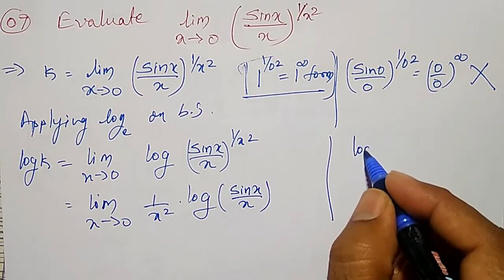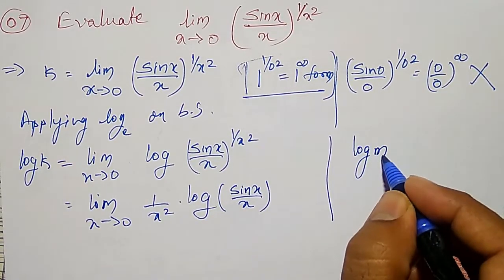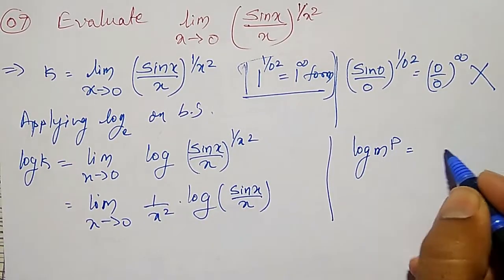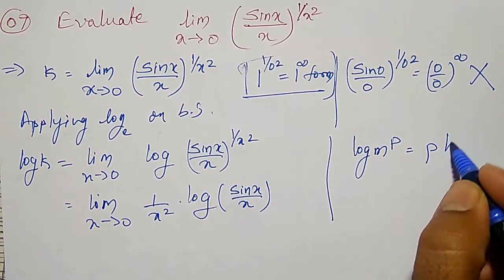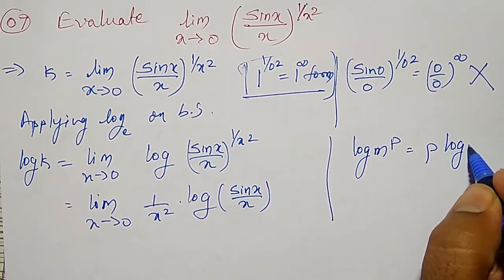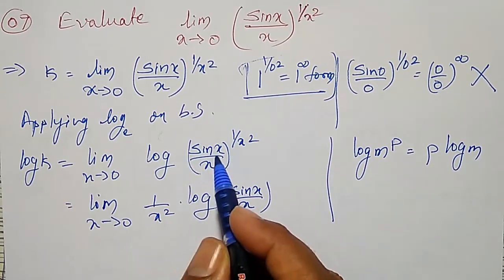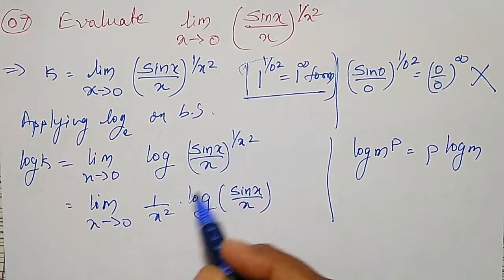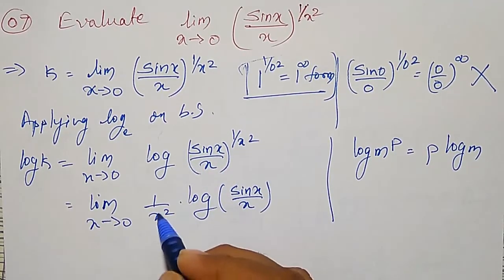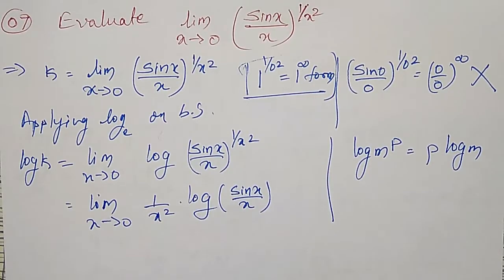Using the logarithm property log(m^p) = p·log(m), I can write this as limit as x tends to zero of (1 / x²) into log(sin x / x), where (sin x / x) is m and (1 / x²) is p.